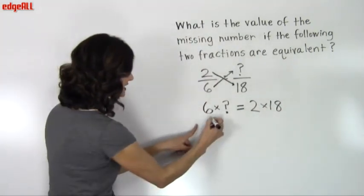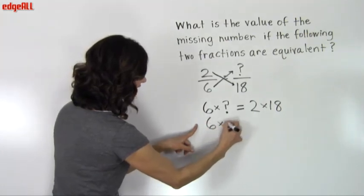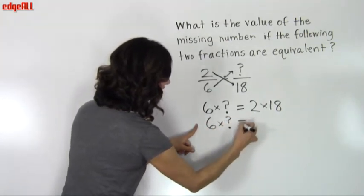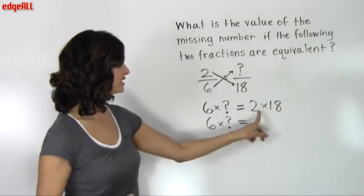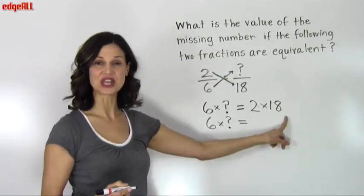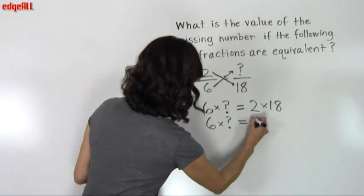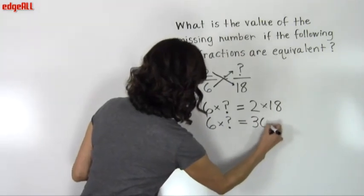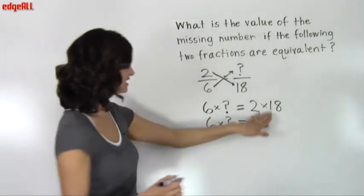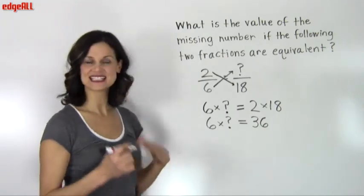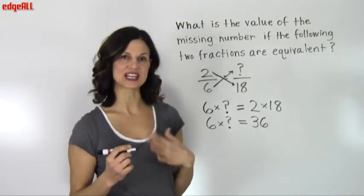So 6 times some unknown number is going to be equal to 36. So I can make a 36 over here on this side and go ahead and do that calculation. So 6 times some number equals 36.